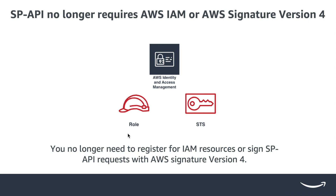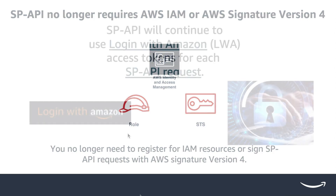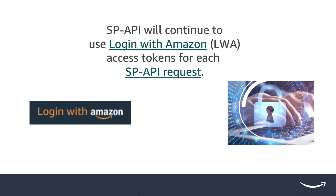This means that you will no longer need to register for AWS IAM resources or sign an SP API request with AWS Signature version 4. Security and efficiency of our platform remains a priority.